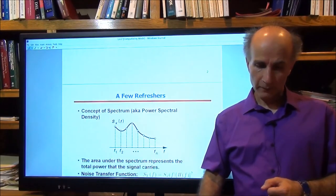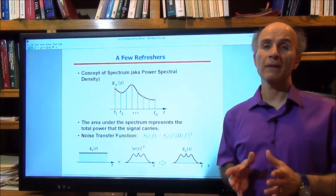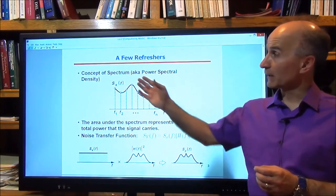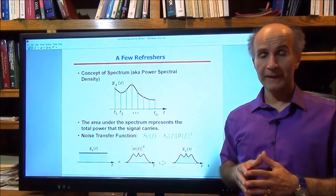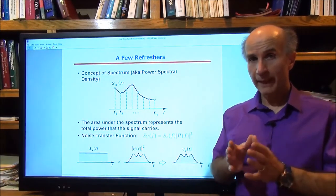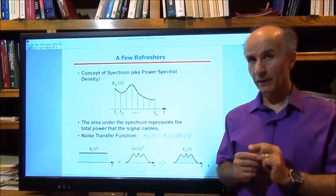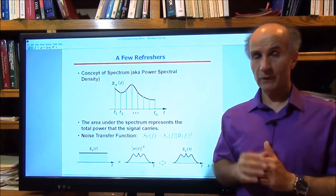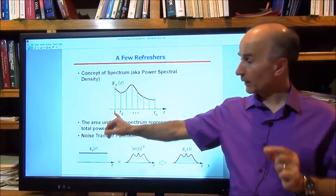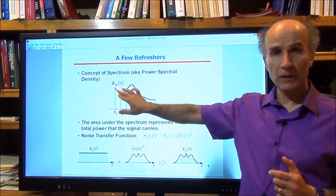Before we do that, let's refresh our memory about a few concepts raised in the previous lecture. We talked about the concept of spectrum or spectral density, and we saw that the spectrum represents the average power that the signal or noise carries in a one-hertz bandwidth centered at a given frequency. So for example, at frequency F1, in a one-hertz bandwidth, we have this much average power, and at frequency F2, we have this much, and so on.